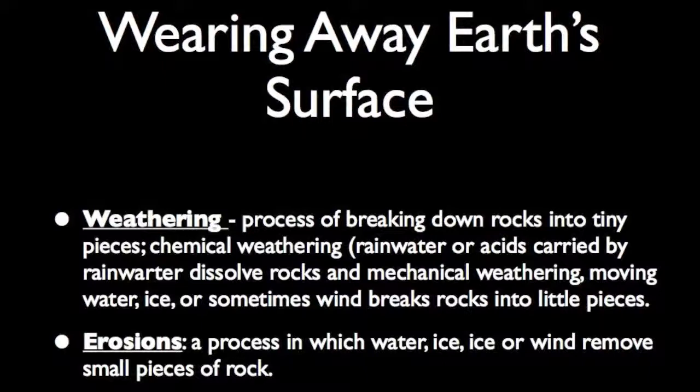Weathering is a process that breaks rocks down into tiny pieces. There are two kinds of weathering: chemical weathering and mechanical weathering. In chemical weathering, rainwater or acids carried by rainwater dissolve rocks. In mechanical weathering, moving water, ice, or sometimes wind breaks rocks into little pieces. Mechanical weathering can happen after chemical weathering has weakened rocks.